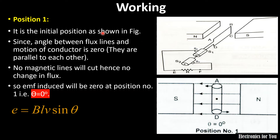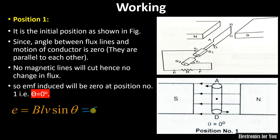This is an example of dynamic induction since the coil is moving. In dynamic induction the mathematical equation is E = BLV sinθ. Since sin 0° = 0, it means E = 0. Therefore at position 1, when the magnetic lines of force are parallel to the coil, EMF induced equals zero.